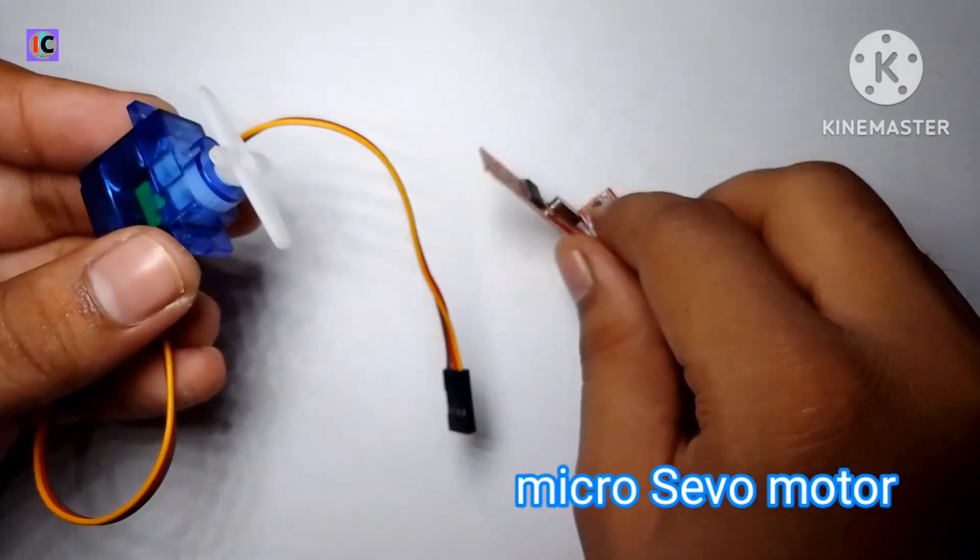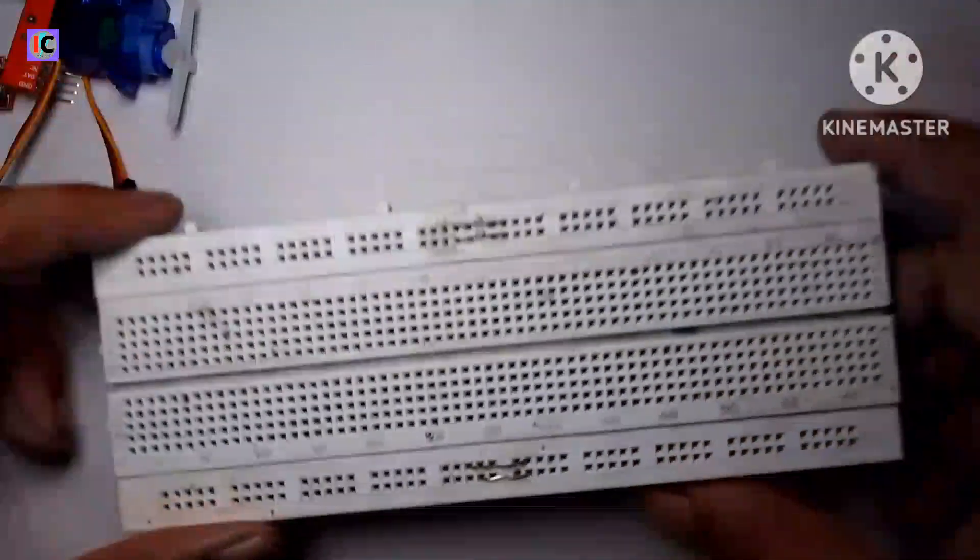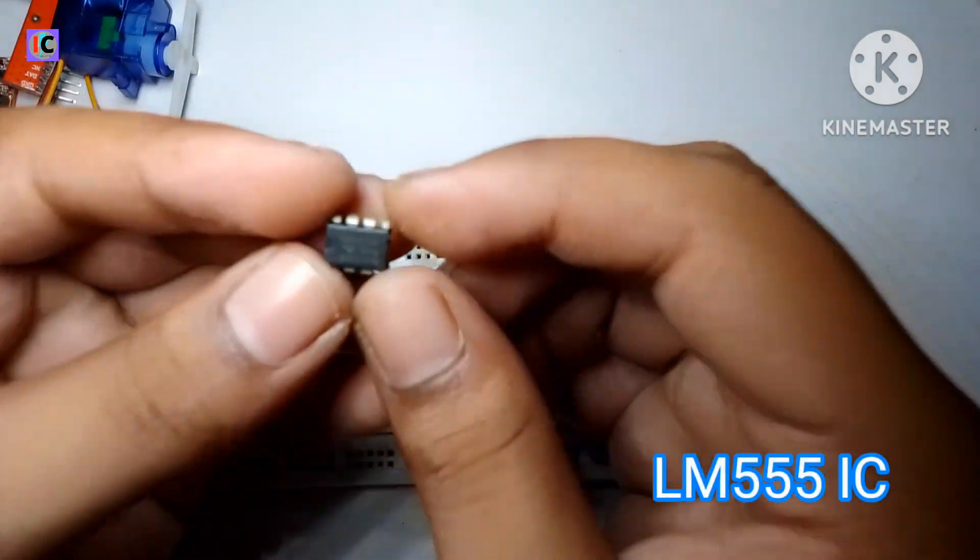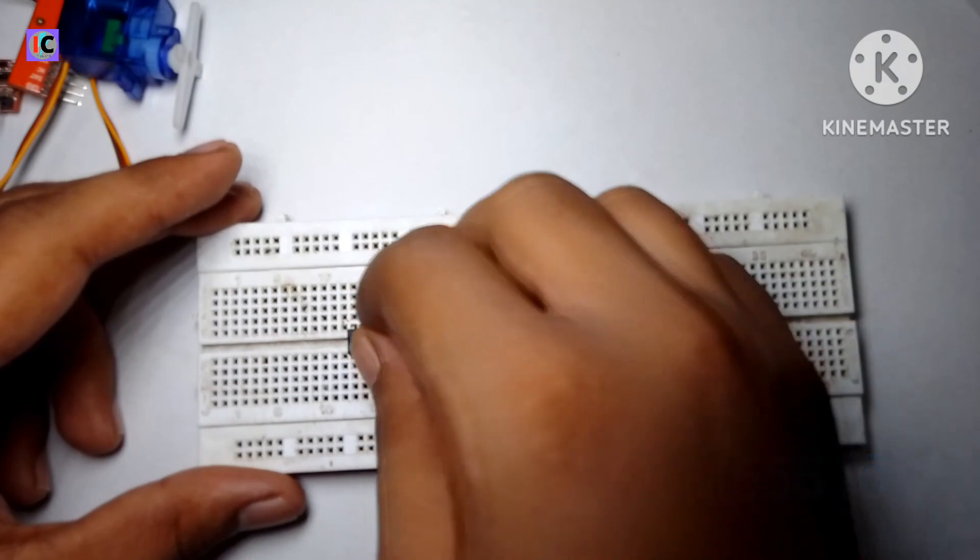This is the servo motor that we are going to control. For this we have to use some circuitry, and I made it on breadboard. This is the LM555 timer IC.